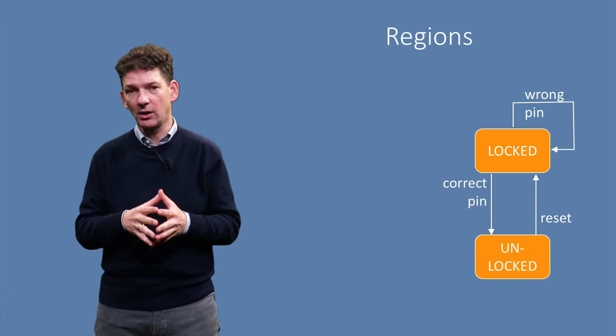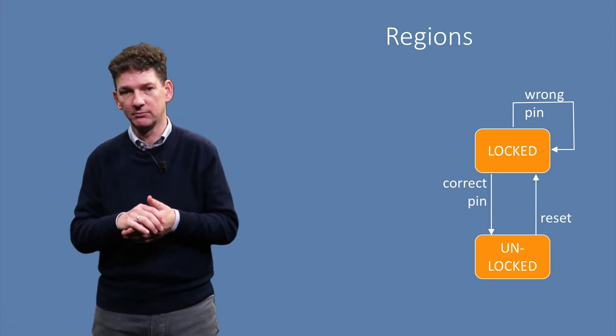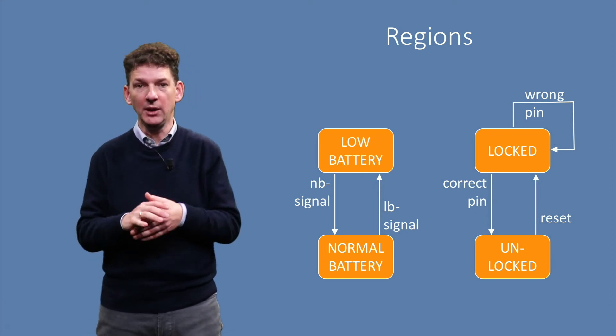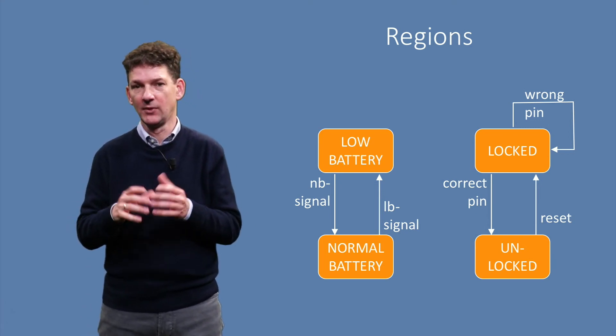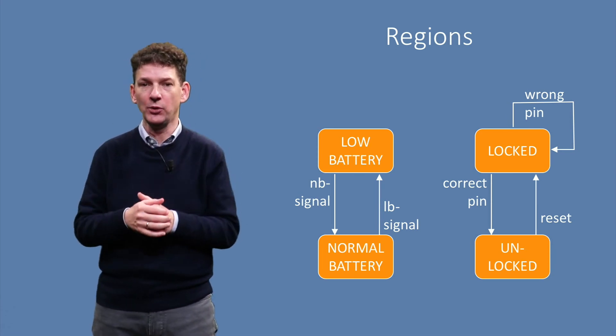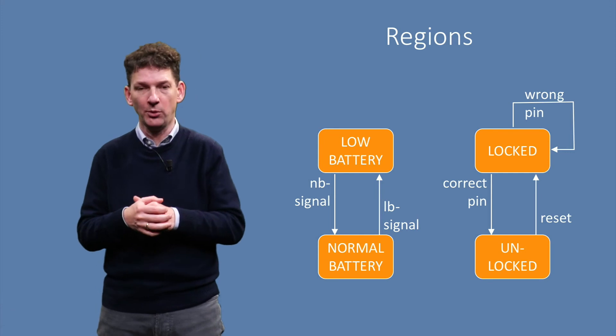Let's start again with our unlocking state machine shown here. In parallel to locking, the phone may be in various battery modes. Here we see two battery modes, low and normal, with some signaling events between them to move from low to normal and back.